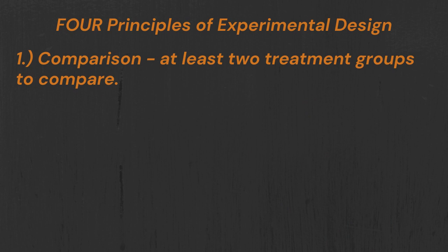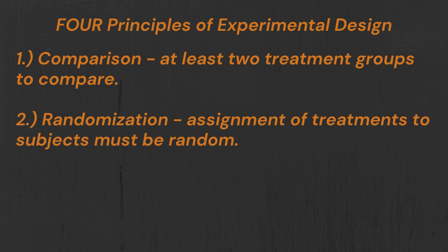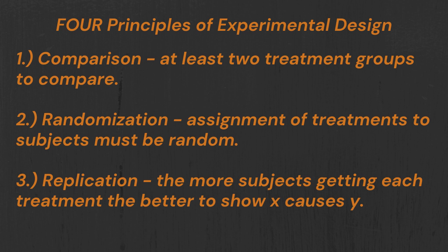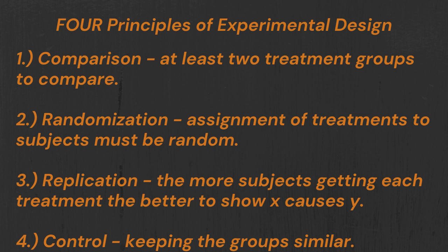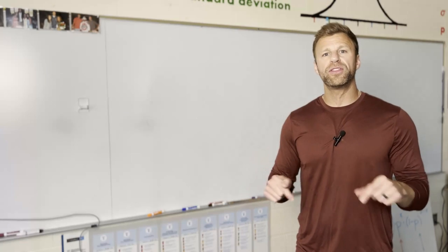You've got to have comparison. There's got to be at least two treatment groups or more. You've got to have randomization. Who gets what treatment has got to be done randomly. You've got to know about replication, the idea that the more subjects in the experiment, the better for your effect size, and completely redoing the experiment again to show similar results. And the fourth thing is control. You want to make sure that the two groups or more groups are treated as similar as possible. We want those groups to be very similar, other than the treatment we give them.